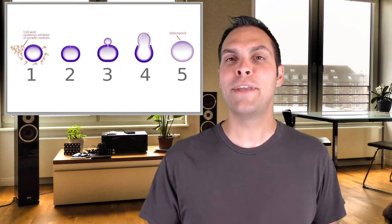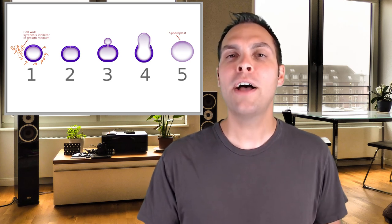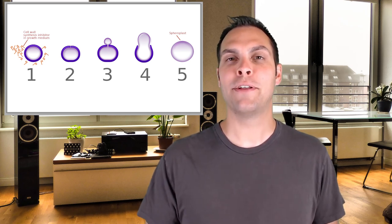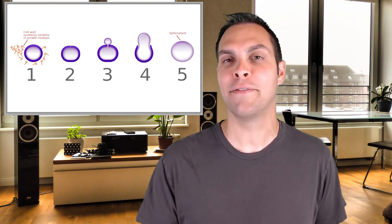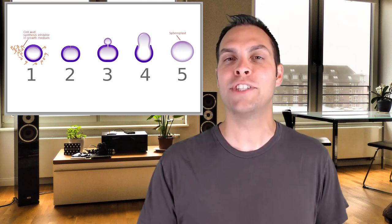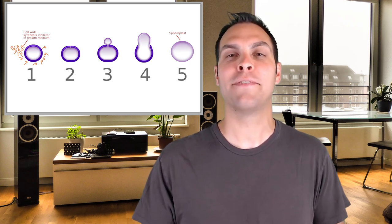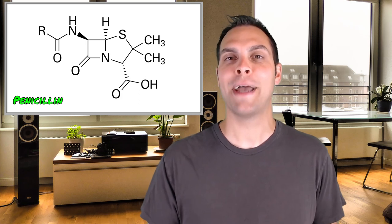Peptidoglycan is a carbohydrate that humans do not produce. Because we lack cell walls and don't produce peptidoglycan, drugs like penicillin that specifically target the cell wall are incredibly effective — they destroy something essential for bacteria that is completely absent in human beings. This makes them selectively toxic: they hurt the bacteria but don't hurt us. Penicillin and many other drugs specifically target the cell wall to destroy bacteria in that way.